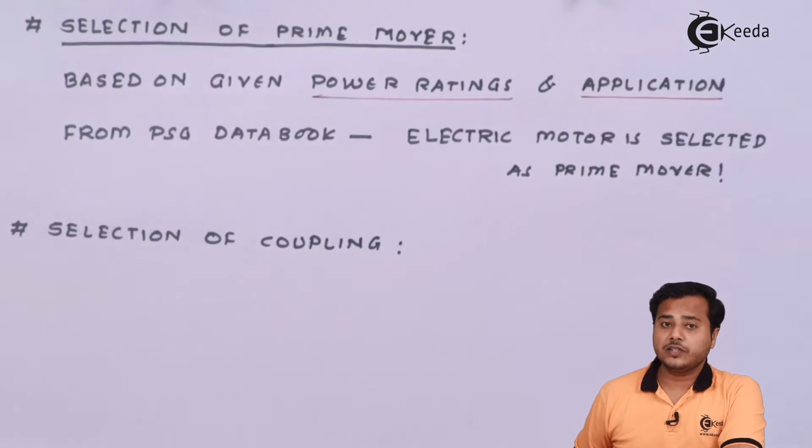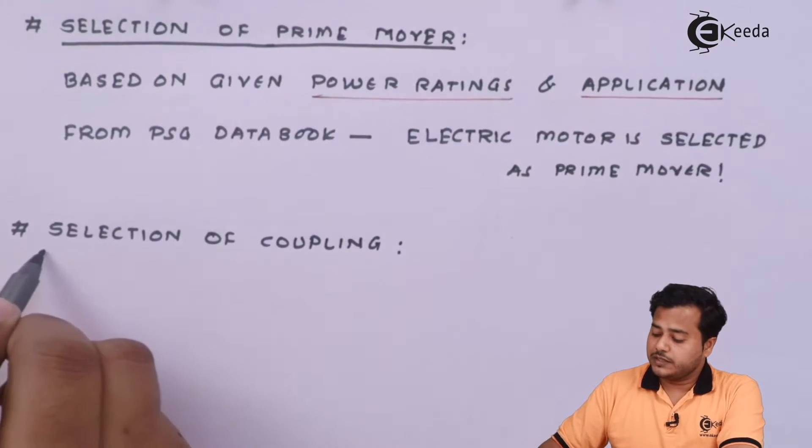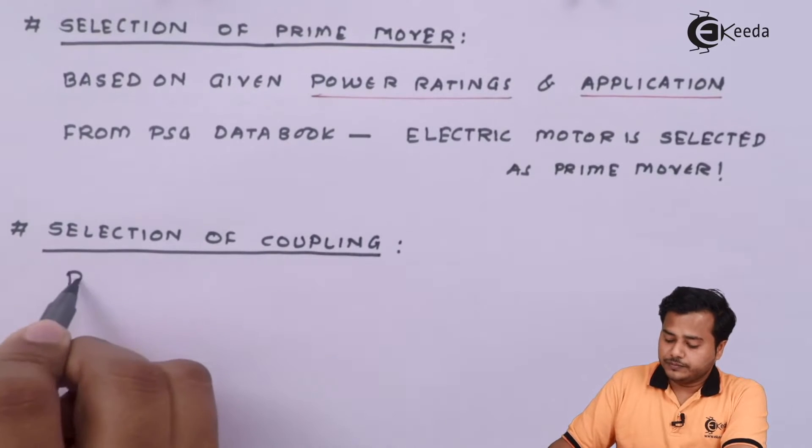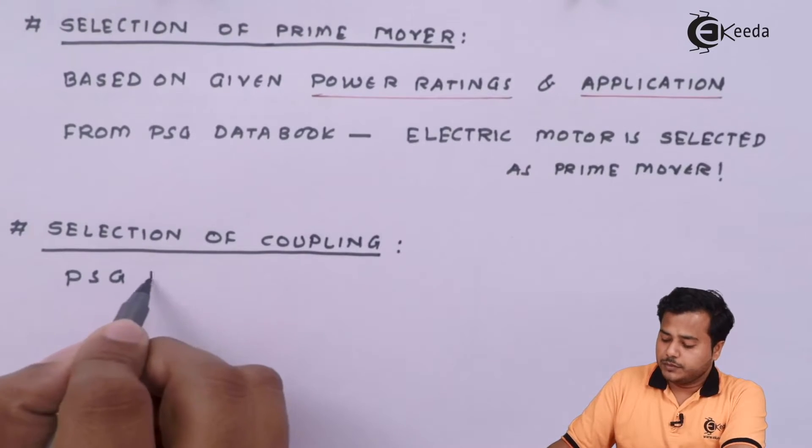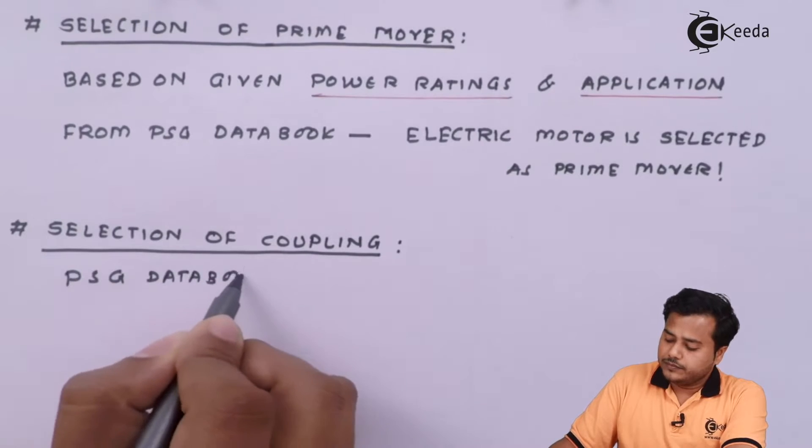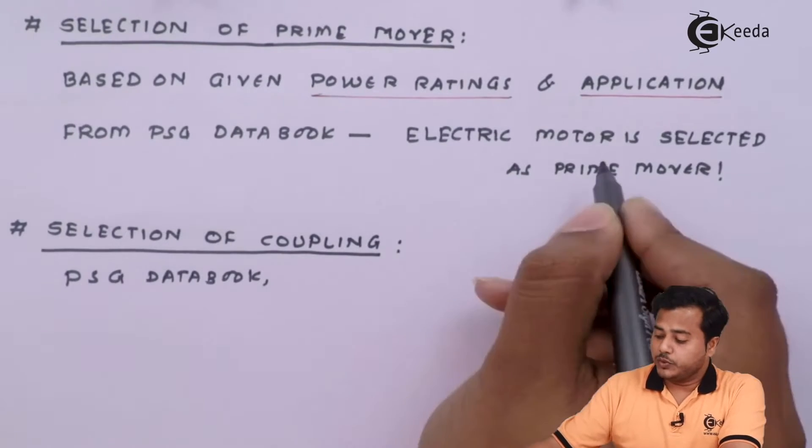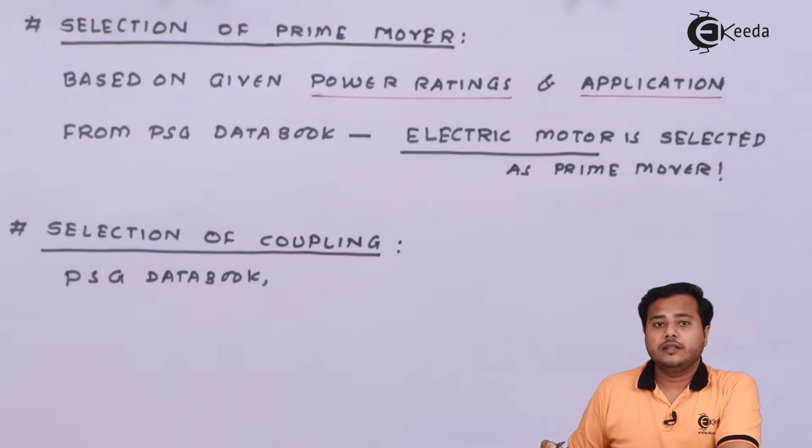The next thing is the selection of coupling which is very important aspect. Again from PSG data book, based on the given data or based on the given aspects, we know that the prime mover is electric motor. And the driven end is going to be centrifugal pump.